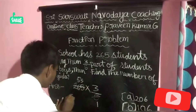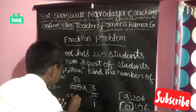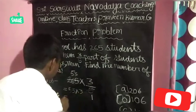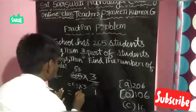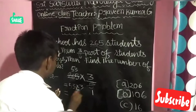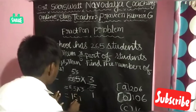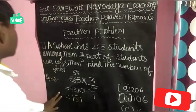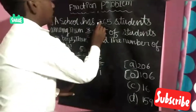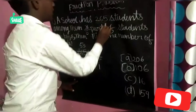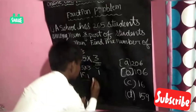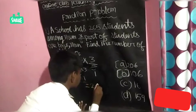Now we have to do the multiplication. 53 into 3 is equal to 159. Now we have to do the fraction of 265 and 159 is equal to 265 minus 159.